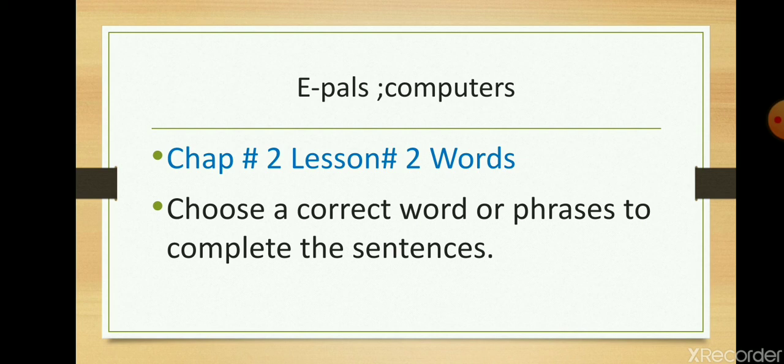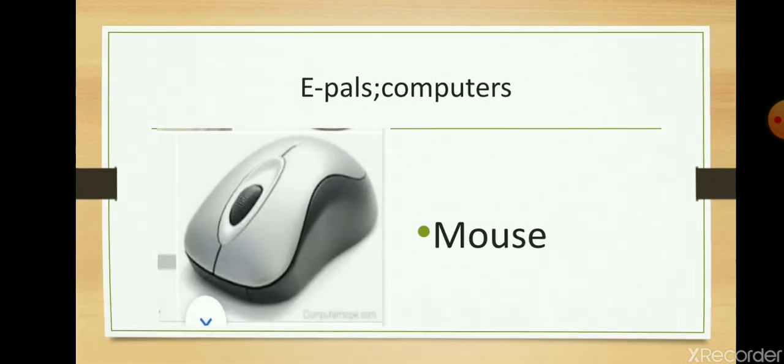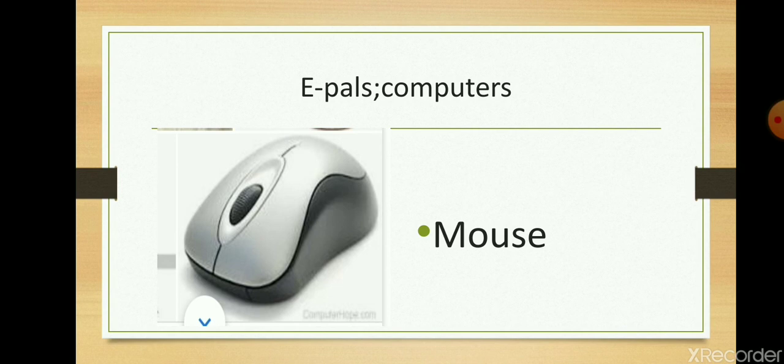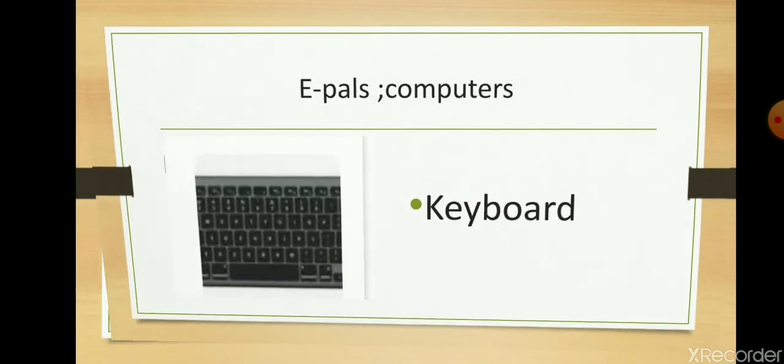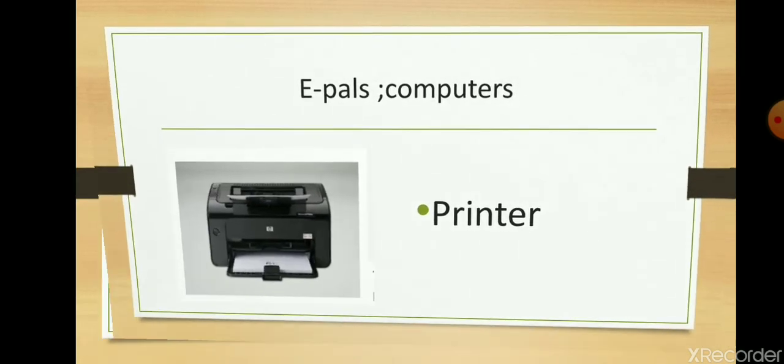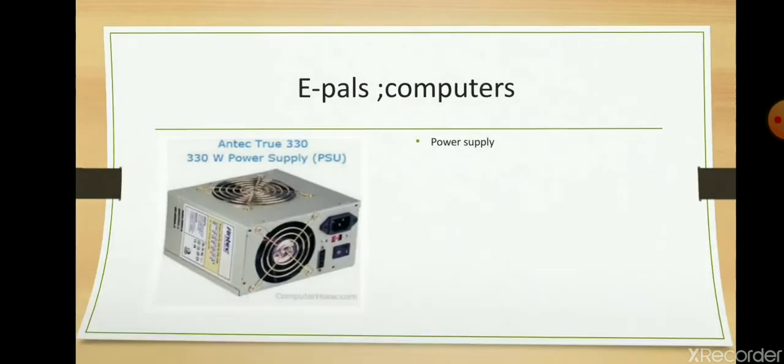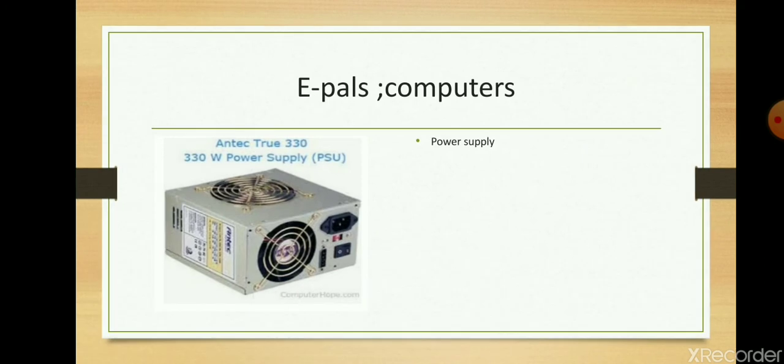In order to understand in a better way, we will discuss the pictures. This is a picture of mouse, and the next one is keyboard, printer, power supply.